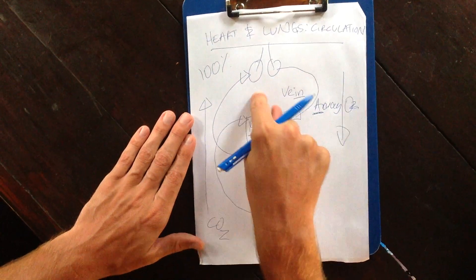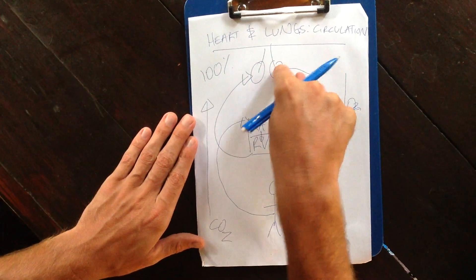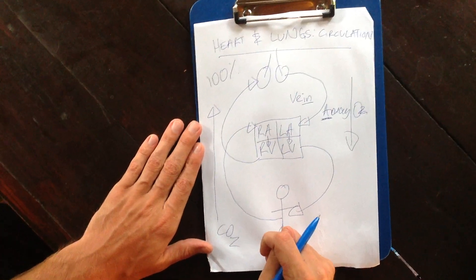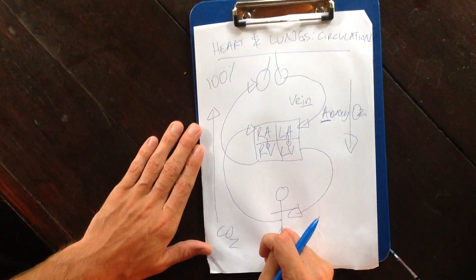So think about your pulmonary system up here, your pulmonary vein, and your pulmonary artery. That is a key point for your level 2, level 3 A&P exam.